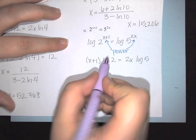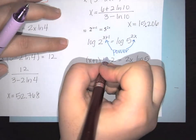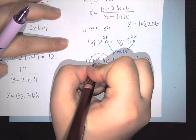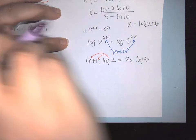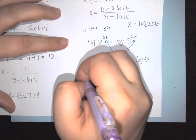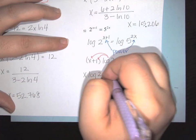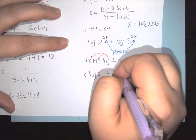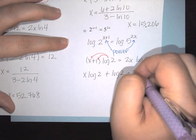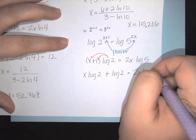I need to distribute the log of 2 into both terms: x log of 2 plus log of 2 equals 2x log of 5.